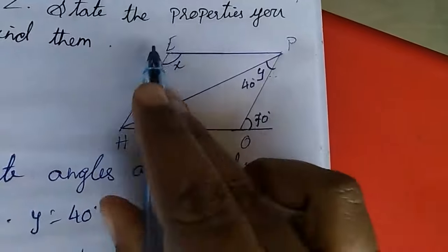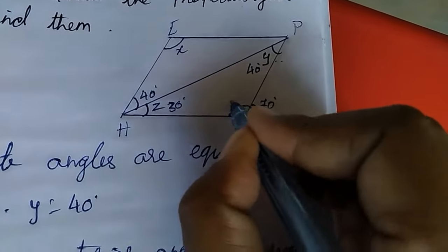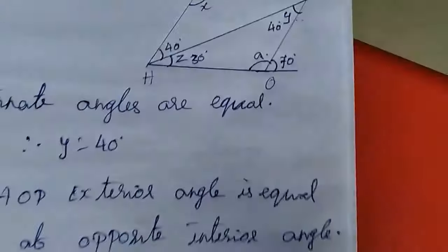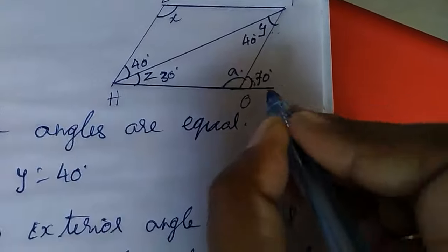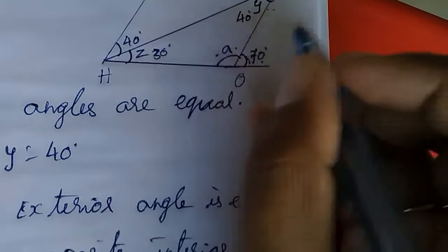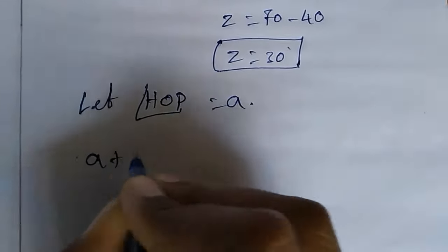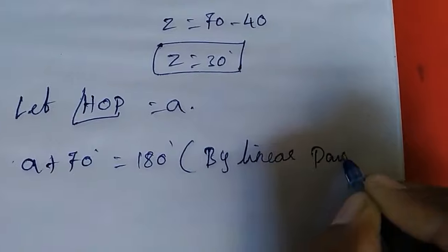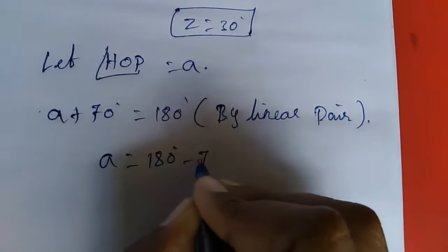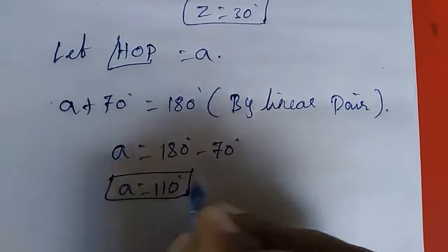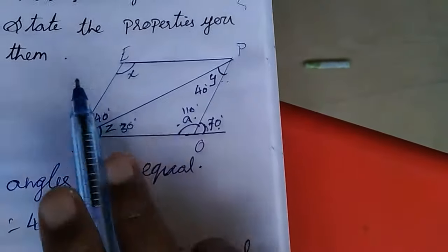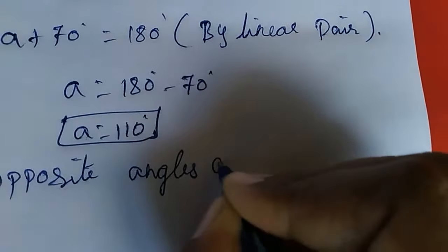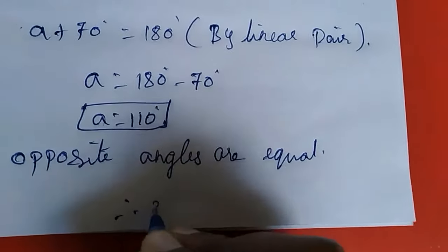X and the angle HOP are opposite angles, so they will be equal. Let angle HOP equal A. This angle and 70 degrees form a linear pair, so A plus 70 degrees equals 180 degrees. Therefore A equals 110 degrees. Since opposite angles are equal, x equals 110 degrees.